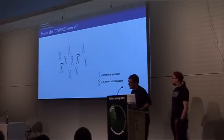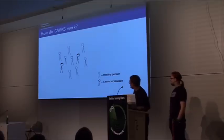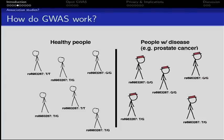Genome-wide association studies work by basically taking a whole population and then grouping it into two groups. Here we have a healthy person with a nice head, and a carrier of a disease. In this example, let's say it's prostate cancer. So if we split them up, we have the healthy people on the left and the prostate cancer people on the right. Then we check certain SNPs, and the SNPs have unique names, always starting with RS and then some number.